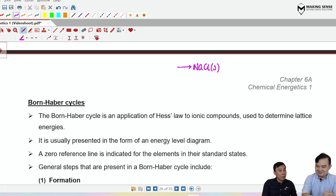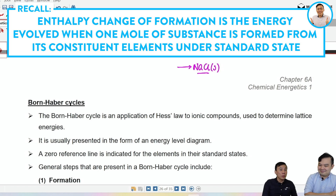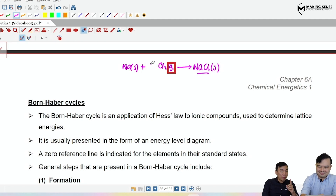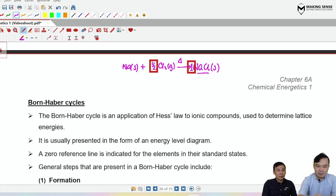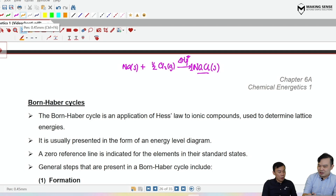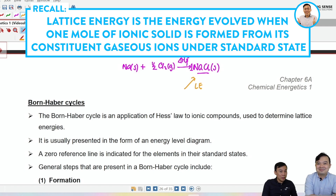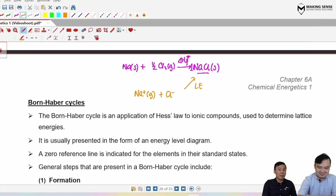Formation is forming one mole of a compound in its specified state from its constituent elements. For NaCl: Na(s) + ½Cl₂(g) → NaCl(s) — note the coefficient in front of the compound must be one, hence ½ in front of Cl₂. This is the enthalpy change of formation. Lattice energy is forming one mole of ionic solid from its constituent gaseous ions: Na⁺(g) + Cl⁻(g) → NaCl(s).